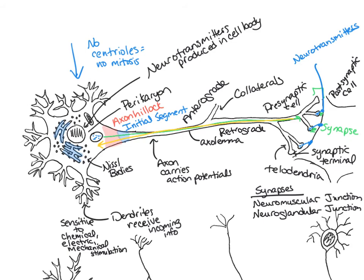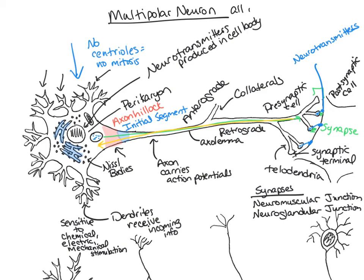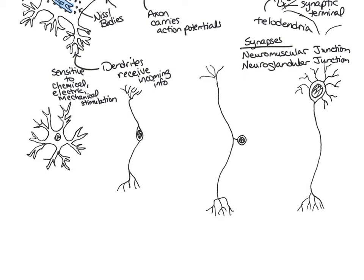The common neuron seen in the body is the multipolar neuron, named because multiple processes extend from the cell body — many dendrites and one axon. Multipolar neurons are found in the central nervous system, and all motor neurons in the peripheral nervous system are multipolar. An anaxonic neuron is small with no anatomical clues to distinguish dendrites from axons, and is located in the brain and special sensory organs.